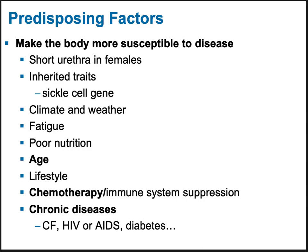For a male, a UTI would typically indicate a serious problem — a sexually transmitted infection, a prostate issue, or an immune deficiency. Inherited traits such as the sickle cell gene are obviously not lifestyle choices. You are the way you are — you're female or you're not, you inherit a gene or you don't. Climate and weather also play a role; you live where you live and that carries its own risks.